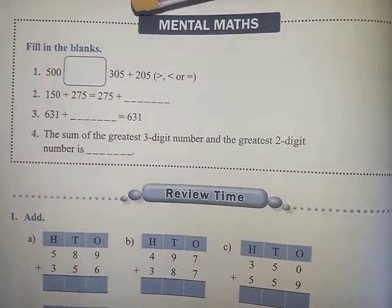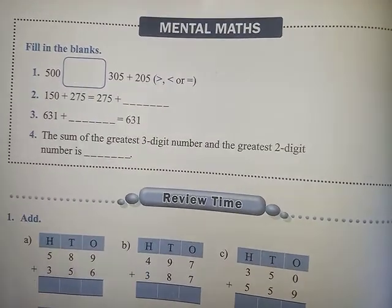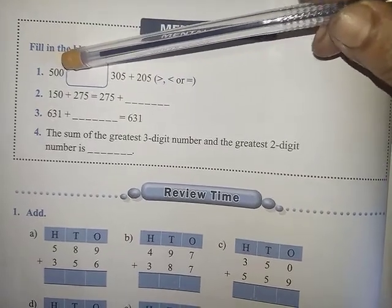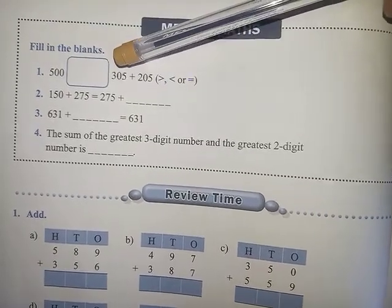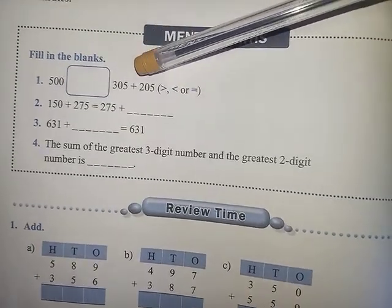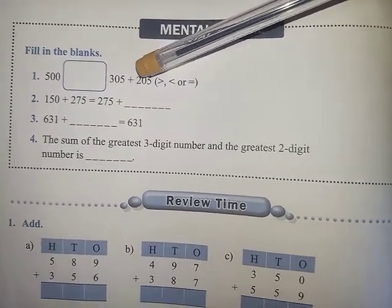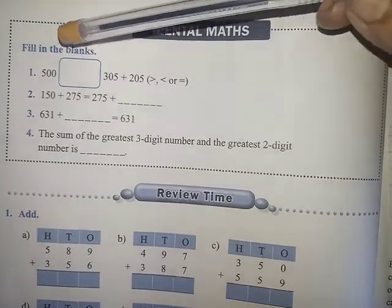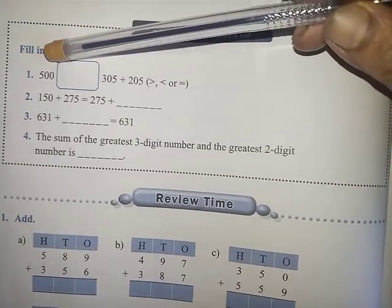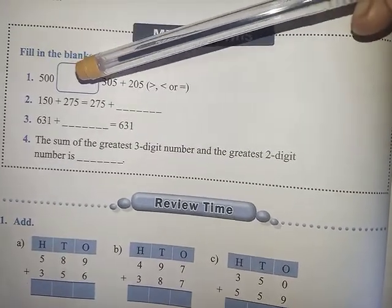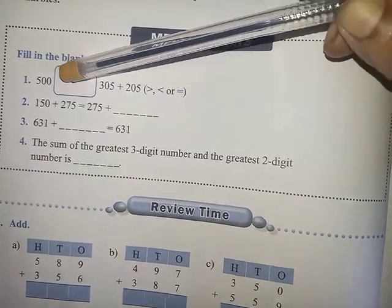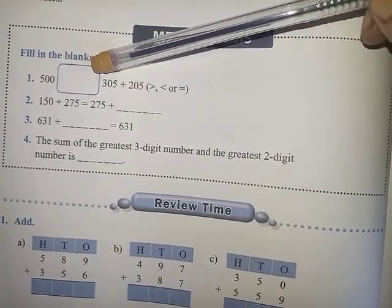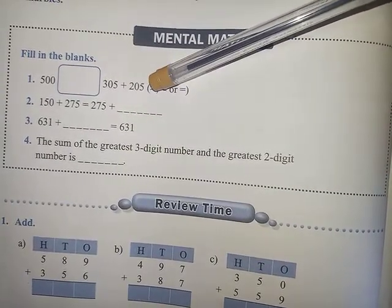Good morning class 2 children. Now I am going to do this mental maths. This side 500 and this side 305 plus 205, that means 510. 510 and this side 500. Obviously this side will be greater, that means the open mouth will be the greater sign.